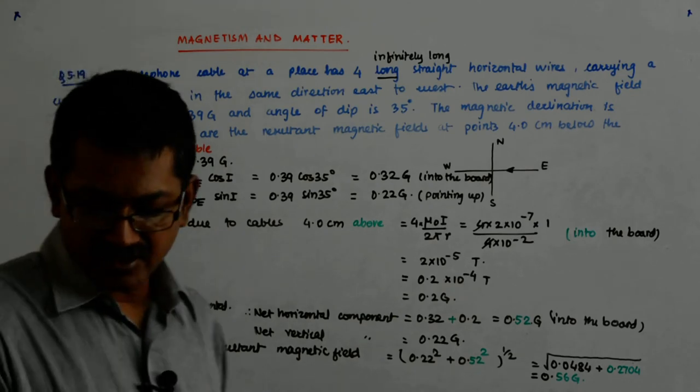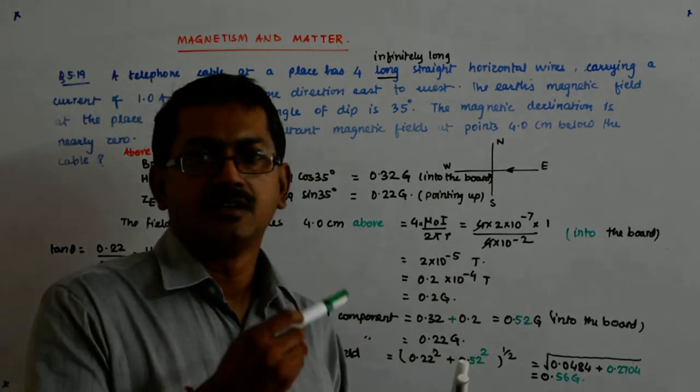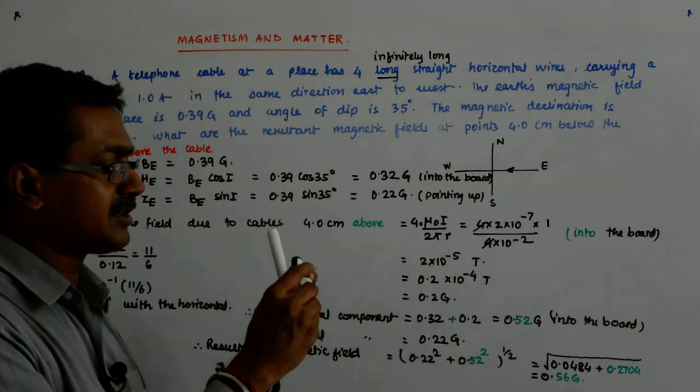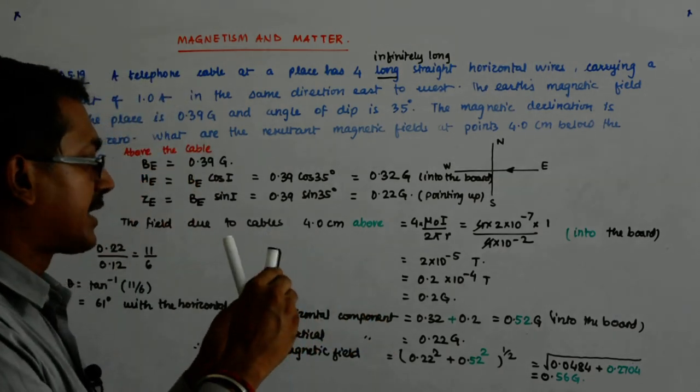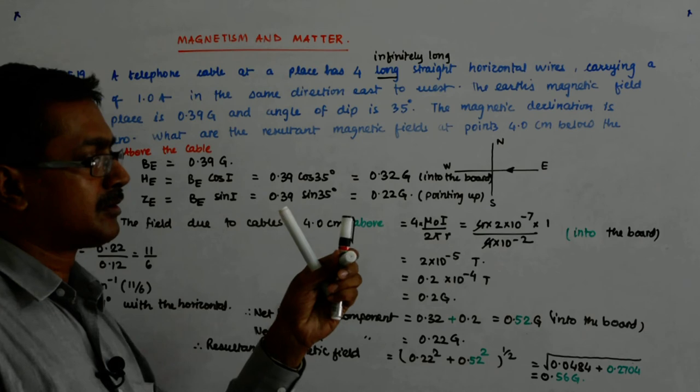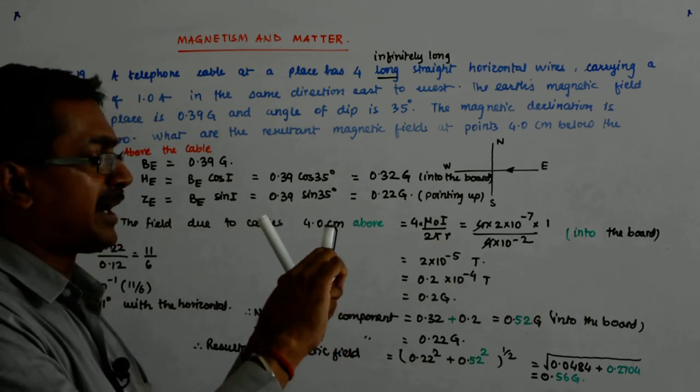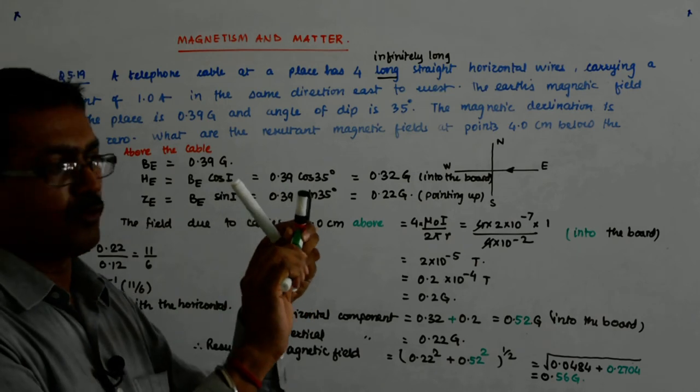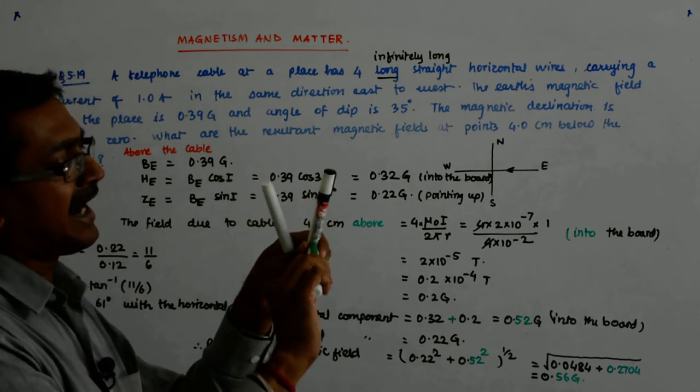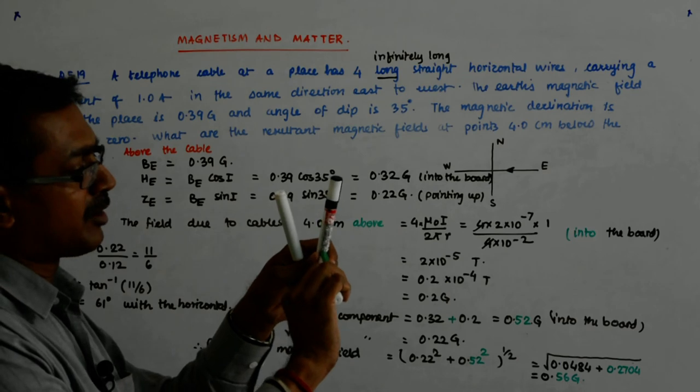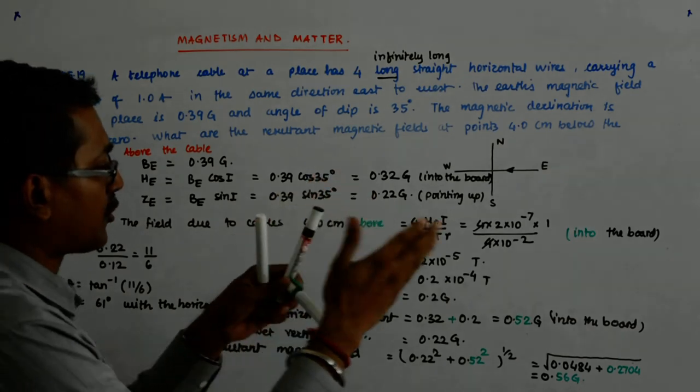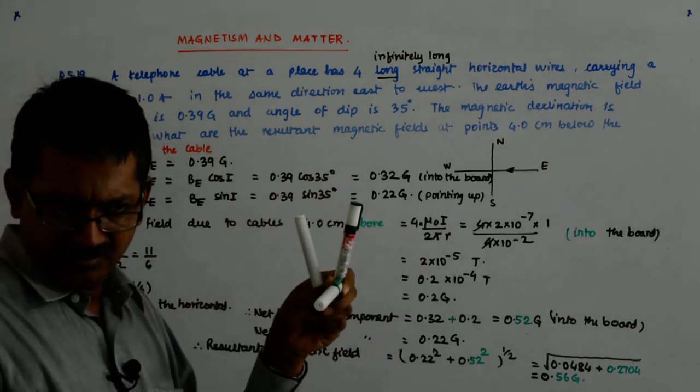So the net is 0.56 Gauss. Now, try to think. So the horizontal component is now this big and my vertical component becomes only 0.22. In earlier case, what was happening? My horizontal component was small, 0.12 and my vertical, below the cable, my vertical component had gone like that. So angle came out to be some 61 degrees.